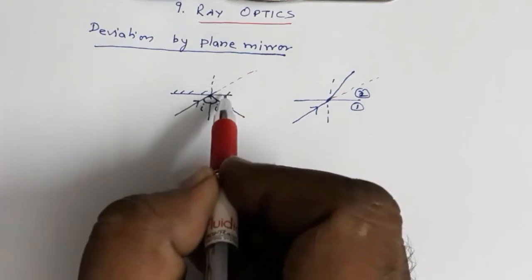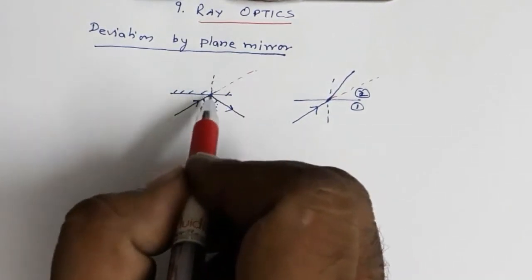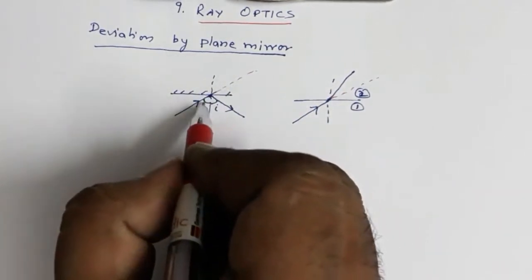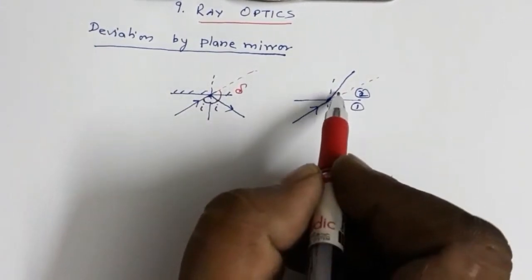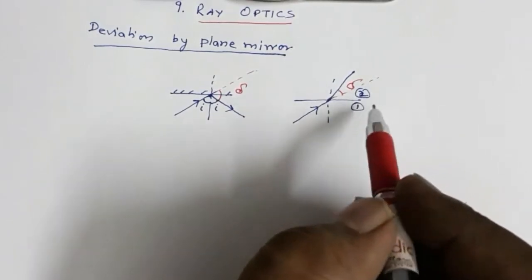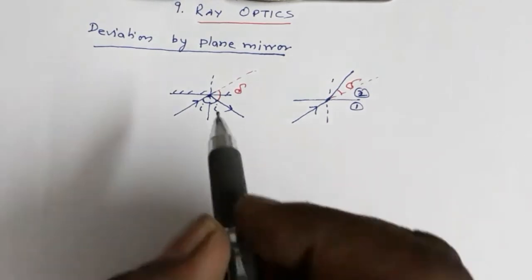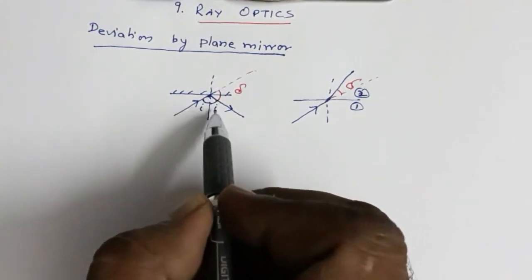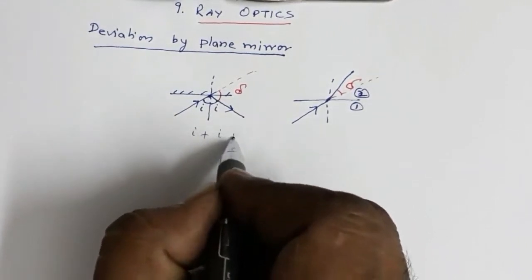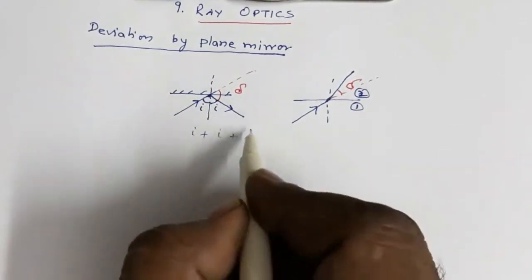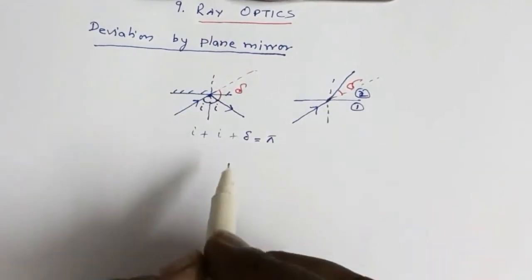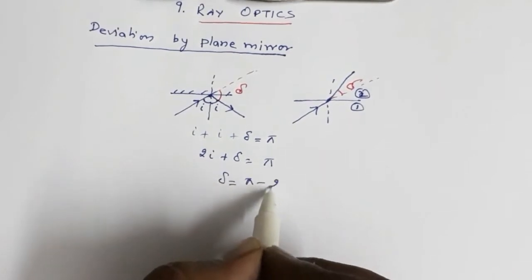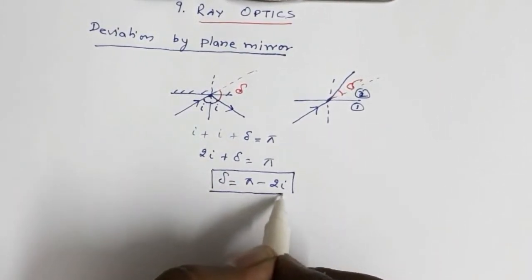The angle between the original direction and the actual direction is the angle of deviation, and this process of a ray getting turned due to the presence of a reflecting or refractive medium is called deviation. So in this case, this is the angle of deviation delta. Now, deviation for refraction we will deal with later. But for a plane mirror: if this is a straight line, the sum of angle I, angle I (angle of incidence equals angle of reflection), and delta will be pi because it is a straight line. So, 2I + δ = π, which gives δ = π − 2I. This is the deviation produced by a single mirror.